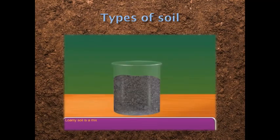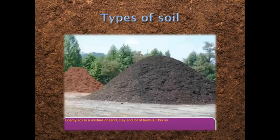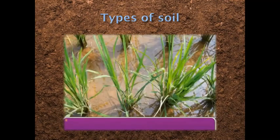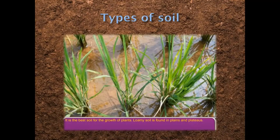Clay soil is found near river mouths. Loamy soil is a mixture of sand, clay, and lot of humus. This soil retains some water and lets the extra water pass through completely. It is the best soil for the growth of plants and is found in plains and plateaus.